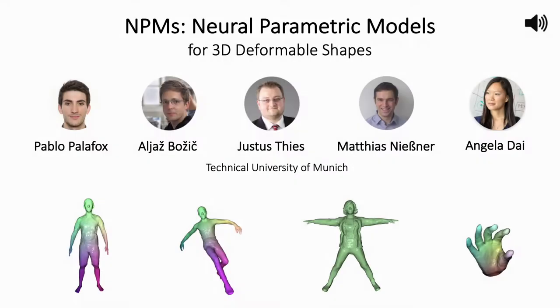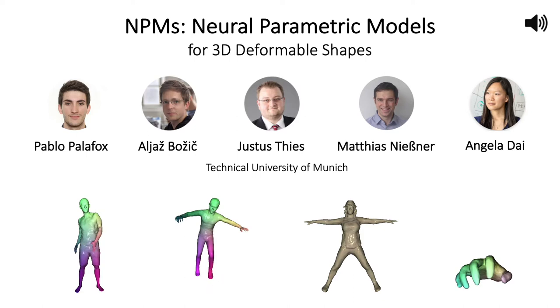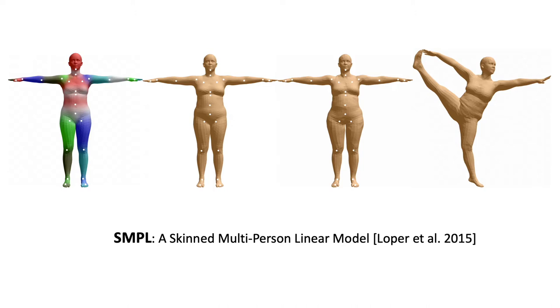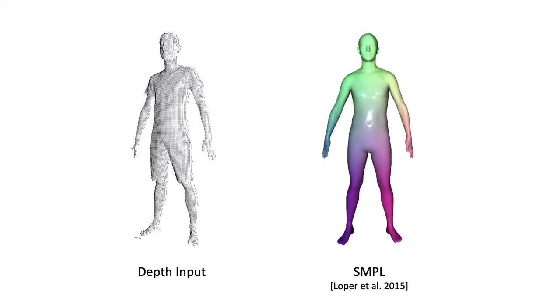We present neural parametric models for 3D deformable shapes. Parametric 3D models, such as SMPL, have enabled a wide variety of tasks in computer graphics and vision. One example application is fitting 3D observations.